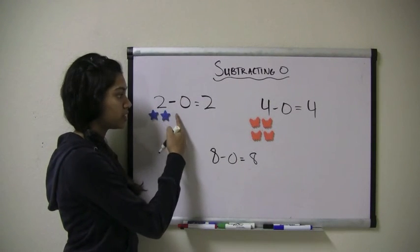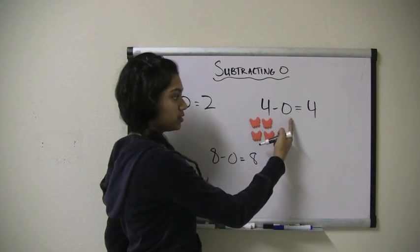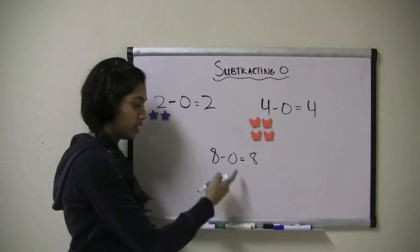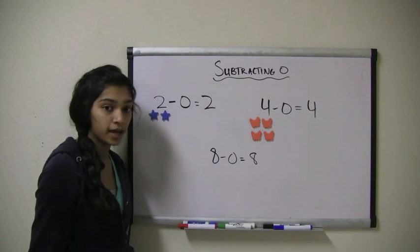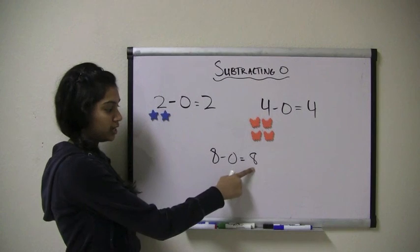Here we have 2 take away 0, so the answer is 2. Here we have 4 take away 0, so we're not taking anything away, and our answer is still 4. Here we have 8 take away 0, or 8 minus 0. Because we're not taking anything away or subtracting anything, our answer is still 8.